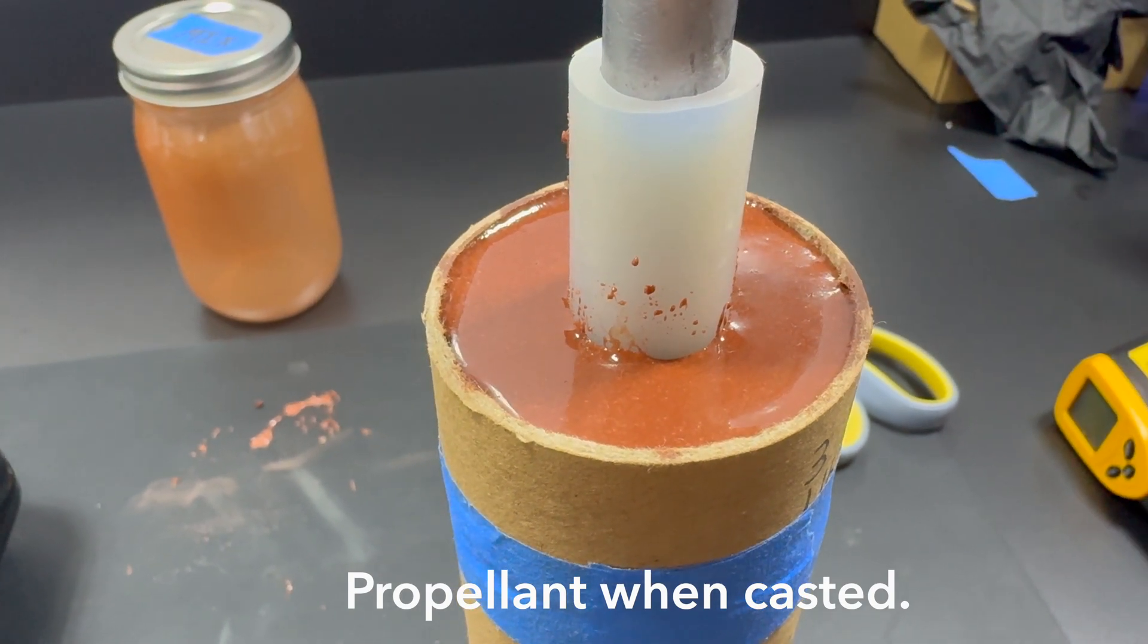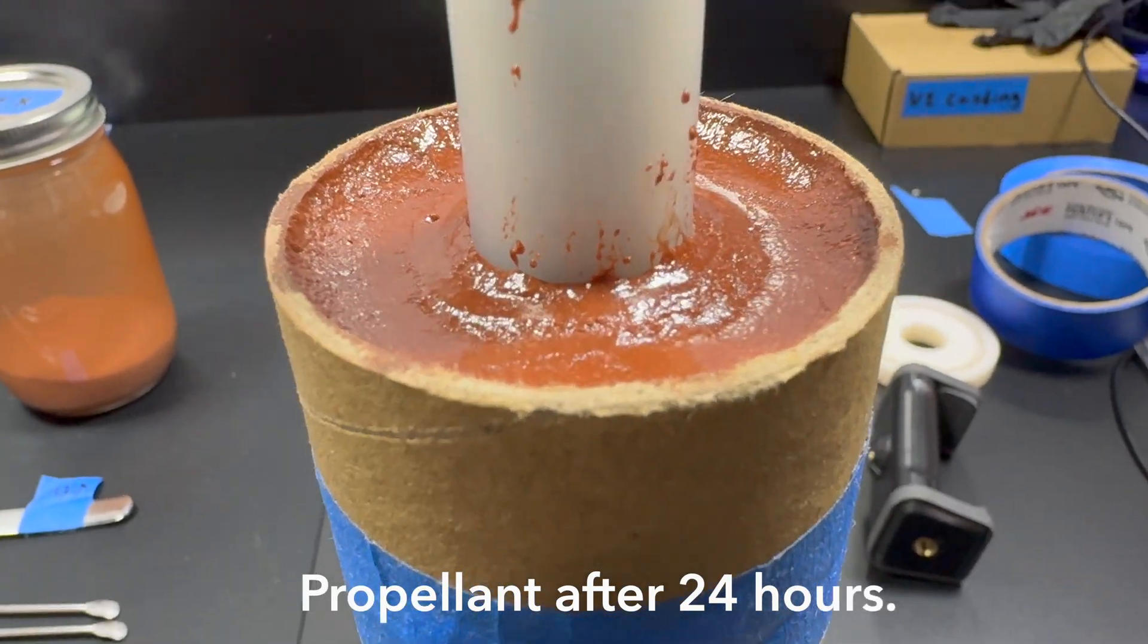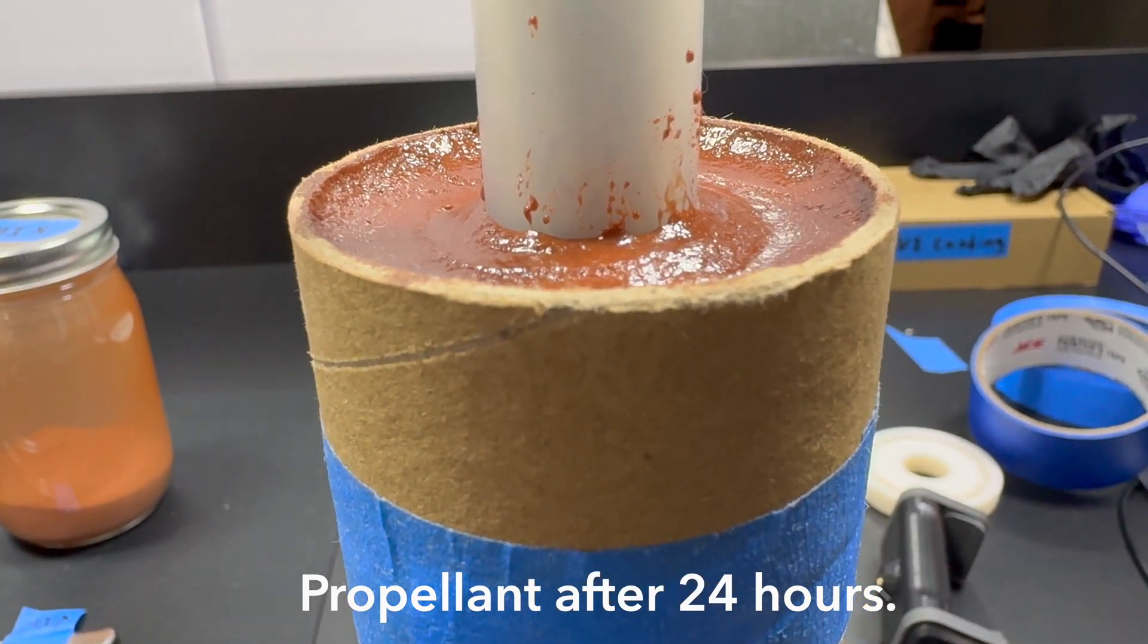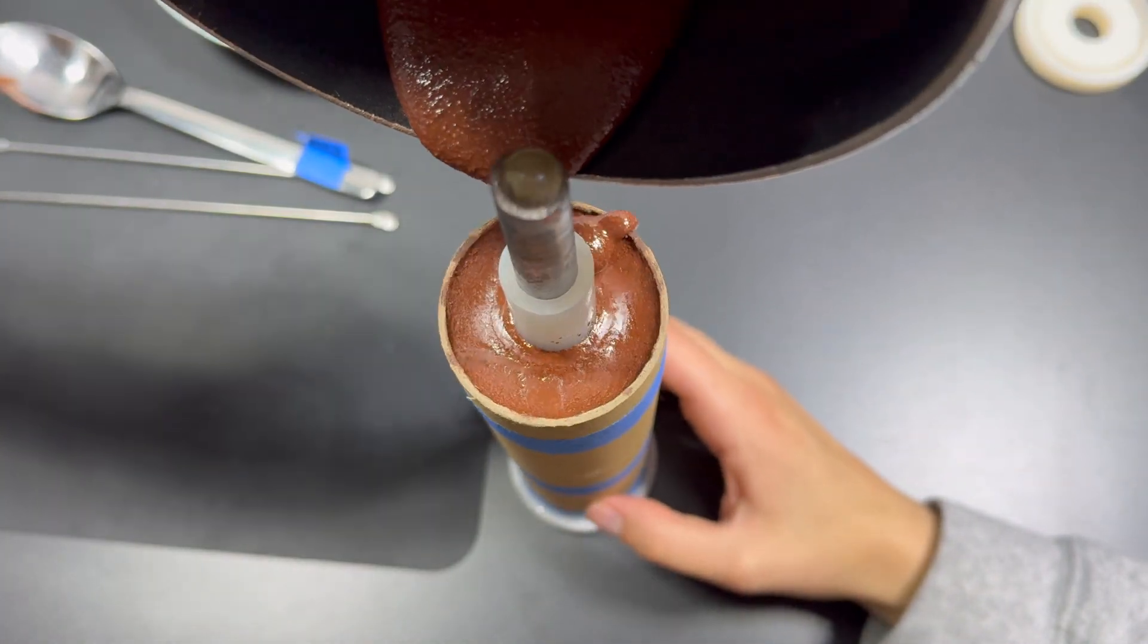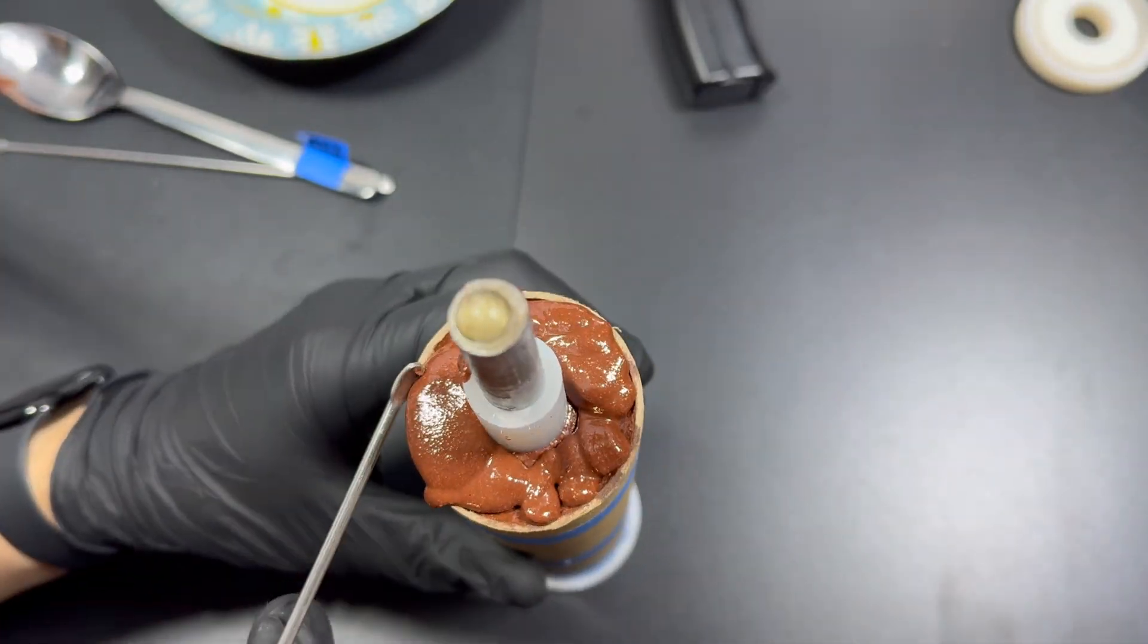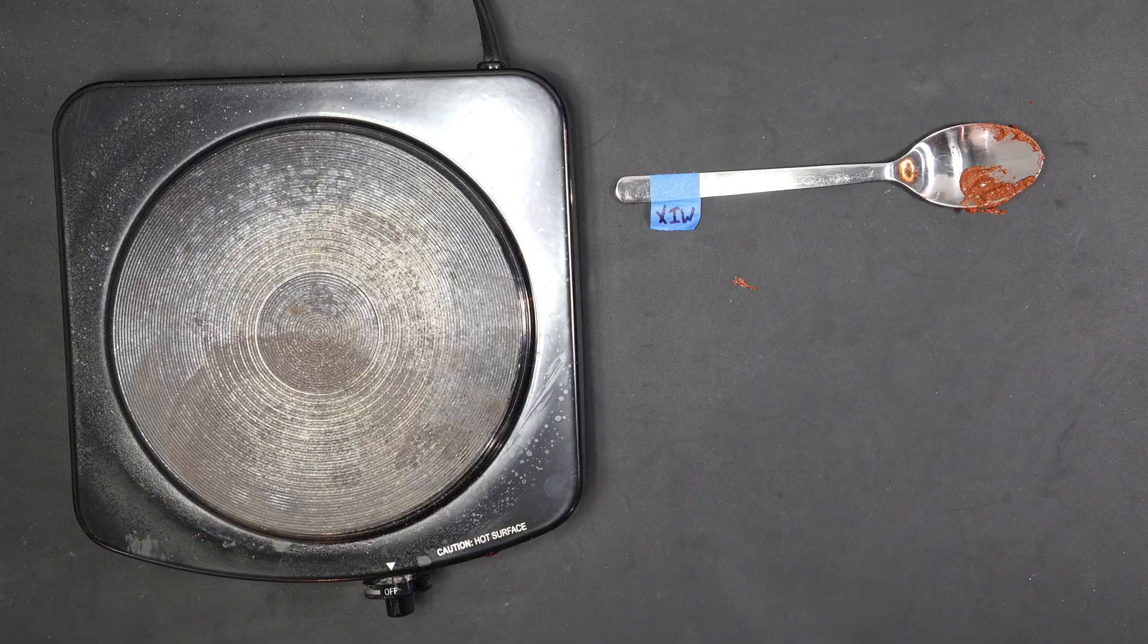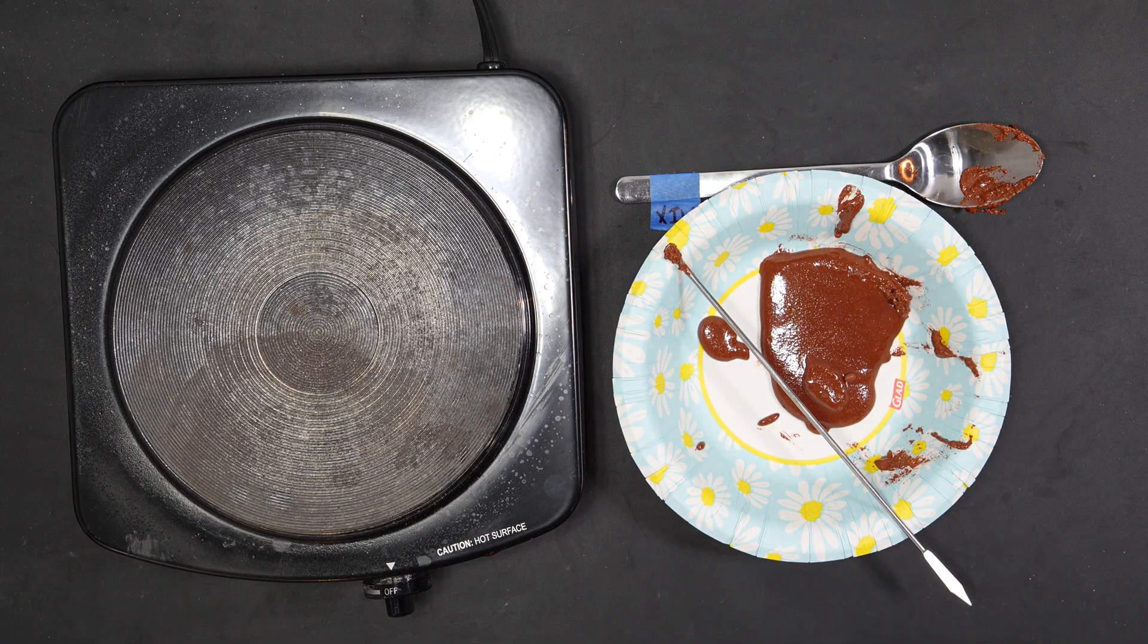To account for that, I wait 24 hours before doing the final small top-off pour. This last pour just makes the surface flush with the top of the liner. I save any leftover propellant to reheat later for making igniters.